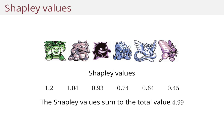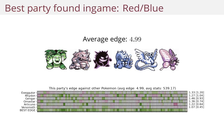Now let's look at some results. The best party found in the Red/Blue games — I have added a constraint that each Pokemon must be able to be found in the game, so I've excluded legendary Pokemon such as Mew and Mewtwo. This is the best party.